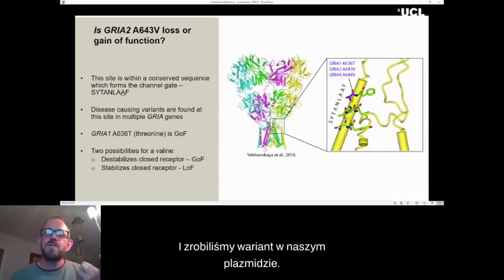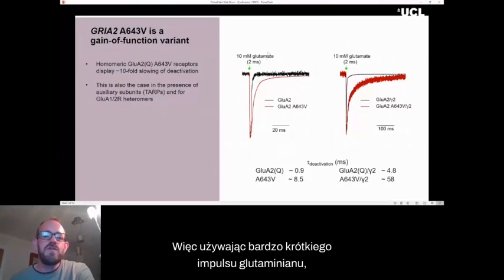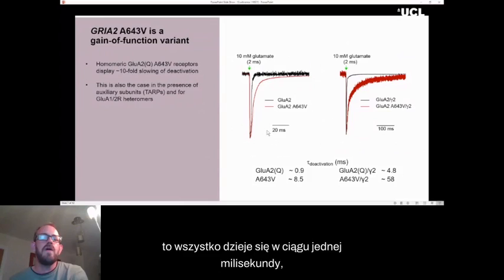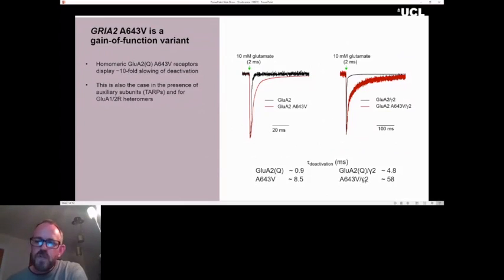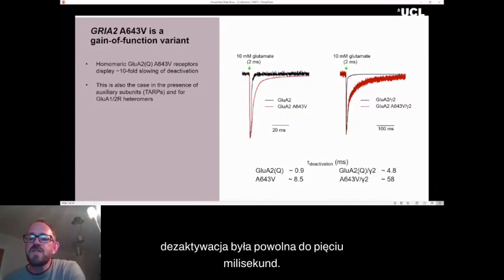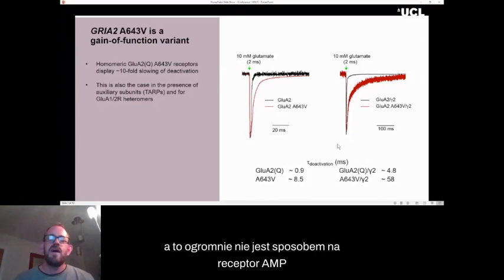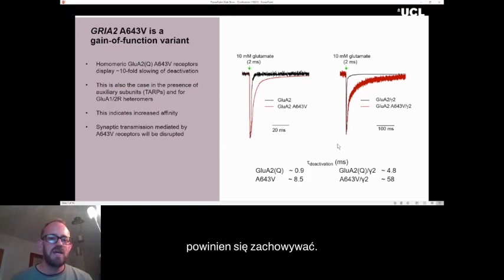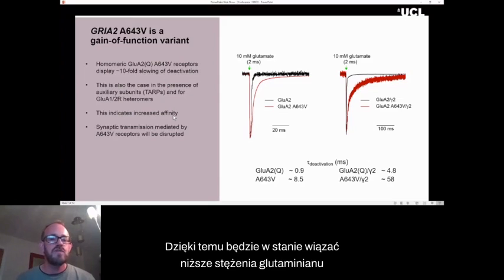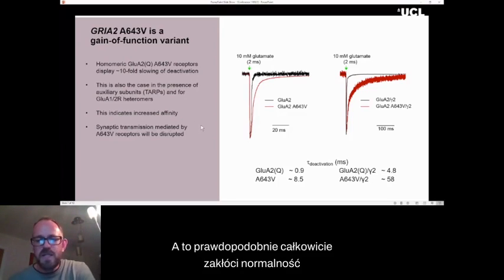We made the variant in our plasmid, we expressed it into the expression system and pulled a patch. And it was immediately obvious that this variant was gain of function. So by using a very brief pulse of glutamate, we can activate the receptor and then glutamate unbinds. For the wild type receptor, this all happens within one millisecond. But for the variant, this was taking more like 10 milliseconds. And that was equally the case in the presence of the important auxiliary subunits called the TARPs, where the deactivation was slowed to five milliseconds. But then it was an additive effect with the variant, giving a deactivation time constant of 60 milliseconds. And this is enormously not how an AMPA receptor should behave. It certainly is likely to indicate an increased affinity. It binds glutamate longer, so it will be able to bind lower concentrations of glutamate and give a larger response. And this is likely to completely interfere with normal synaptic transmission.